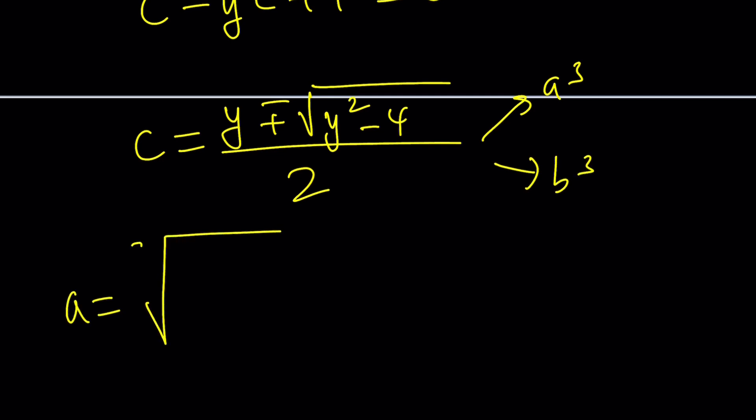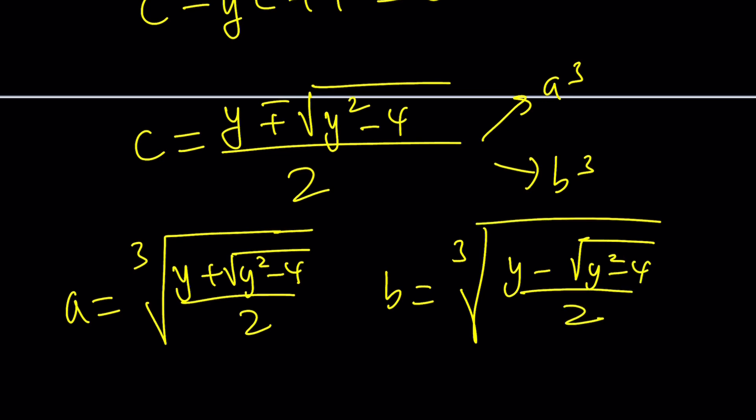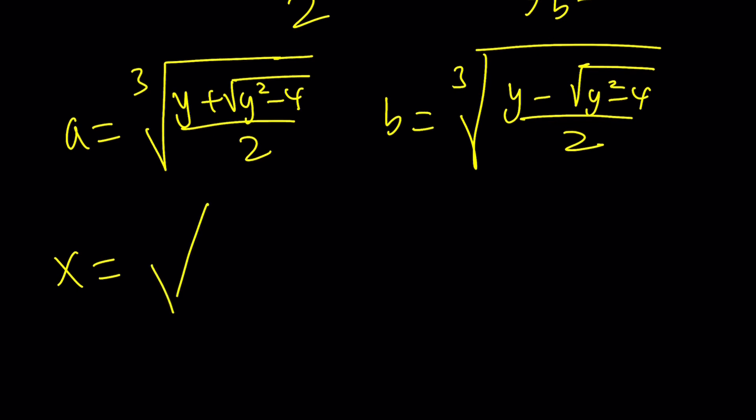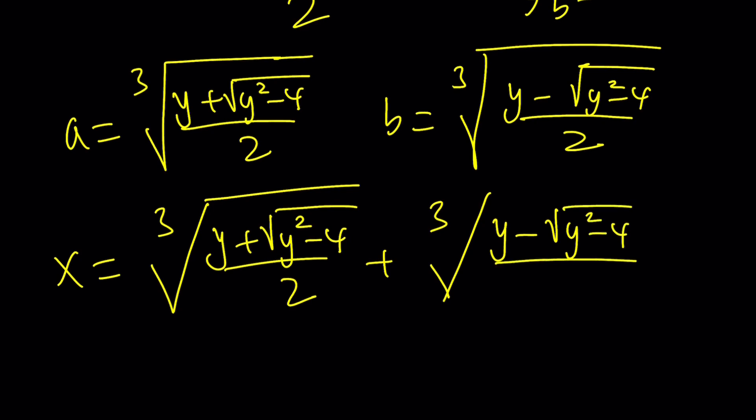Let's say a is the cube root of y plus the square root of y squared minus 4 over 2. And then b is the one with the minus sign. Exact same thing, but there's a minus sign in between. And here we go. And then by adding these, we get the x value. So x is going to be the cube root of y plus the square root of y squared minus 4 divided by 2 plus the cube root of y minus the square root of y squared minus 4 divided by 2.